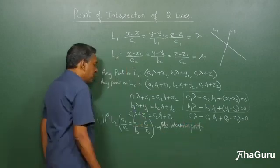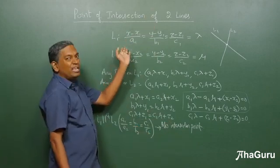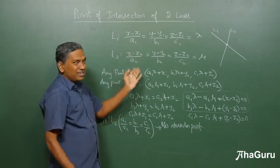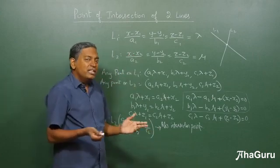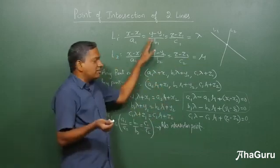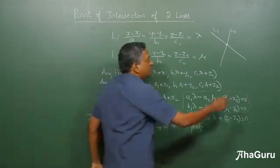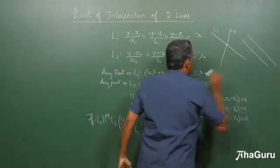But if the lines are parallel, we needn't have done all this. You will just look at L1 and L2 and say, okay, the direction ratios are proportional. Therefore, the lines are parallel, no point trying to find point of intersection. So, we'll just give it up and say that the lines are parallel, that's all. Right, that means the two lines are like this.